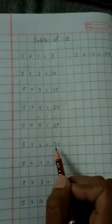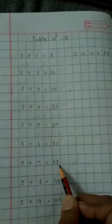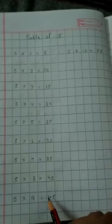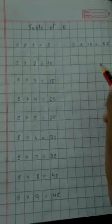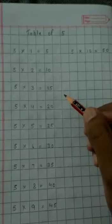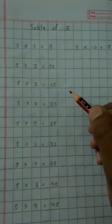5 sixes are 30, 5 sevens are 35, 5 eights are 40, 5 nines are 45, 5 tens are 50. You will write in your copy in the same manner. And you will learn this table. You have to learn the table of 5.